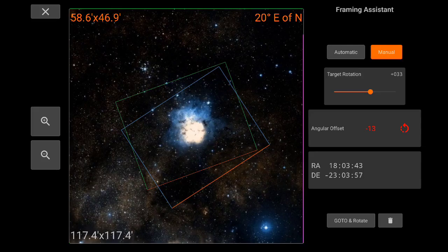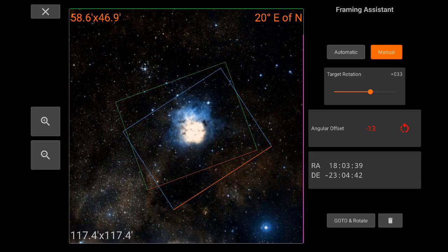And once you're happy with your framing then you can click go to and rotate. So the go to part is pretty straightforward. It will just command the mount to the new center of the blue rectangle. Remember that the green rectangle or the green FOV is what your camera and mount currently looking at since we just solved. So this is what we're currently looking at.